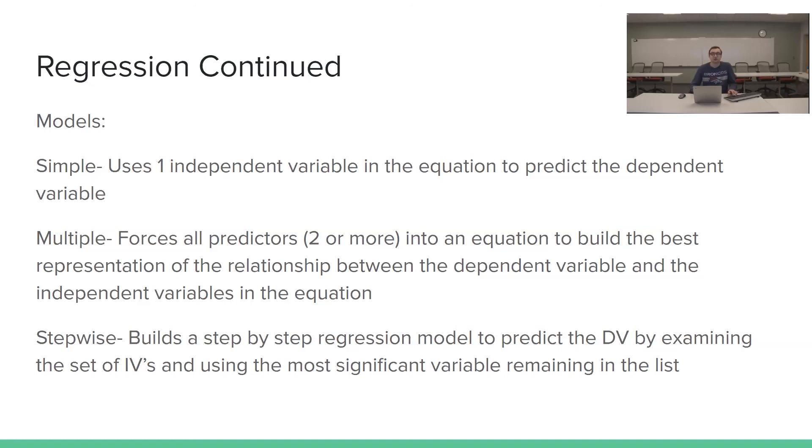So the first one is a simple regression. This uses one independent variable in the equation to predict the dependent variable. Multiple regression forces all predictors into an equation to build the best representation of the relationship between the dependent variable and the independent variables in the equation. And finally, we have stepwise. So this builds a step-by-step regression model to predict the dependent variable by examining the set of independent variables and using the most significant variable at each step of the regression. And this continues until all significant independent variables have been added.